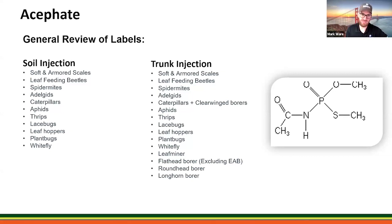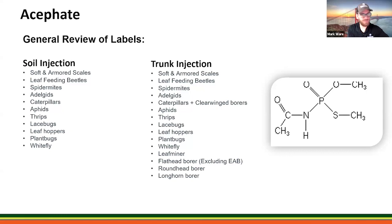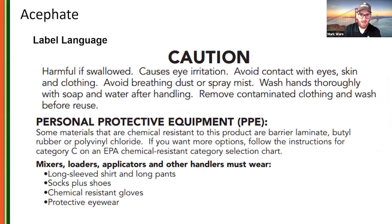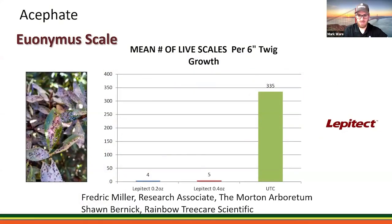You can soil inject or trunk inject acephate, and it controls quite a wide range of pests. What's really cool about acephate is that it's also effective against mites — while most of our neonic products were not good miticides at all, with acephate we sometimes get a two-for-one deal where we're able to control both mites and insect pests with the same product.